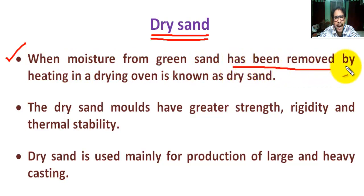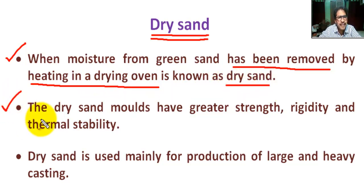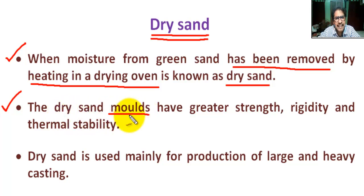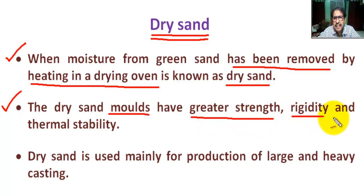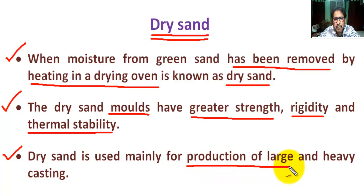Next, what is dry sand? When moisture from green sand has been removed by heating in a drying oven, it is known as dry sand. Molds prepared with dry sand have greater strength, rigidity, and thermal stability. Dry sand is used mainly for production of large and heavy castings.